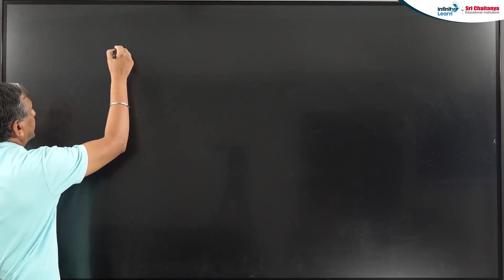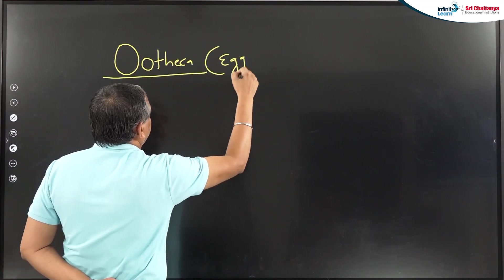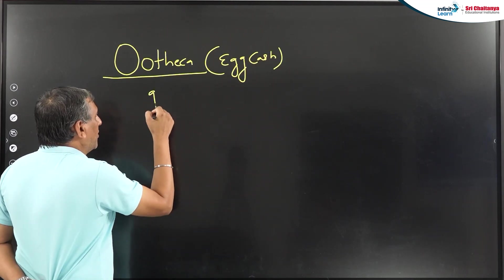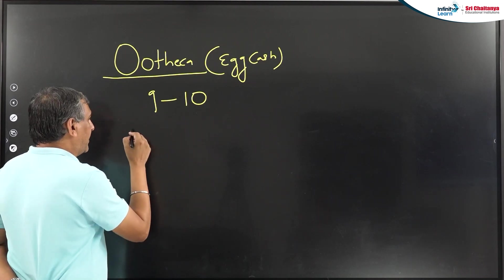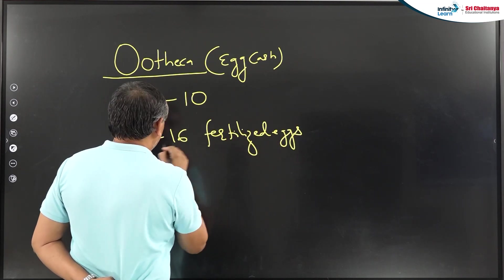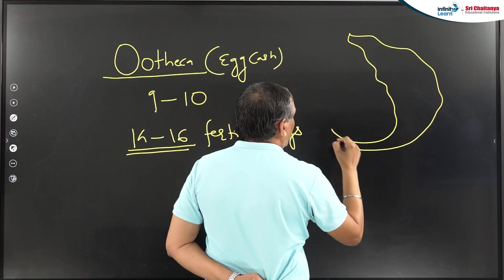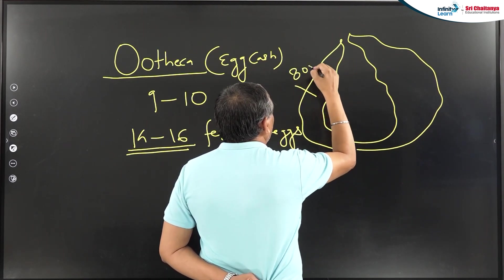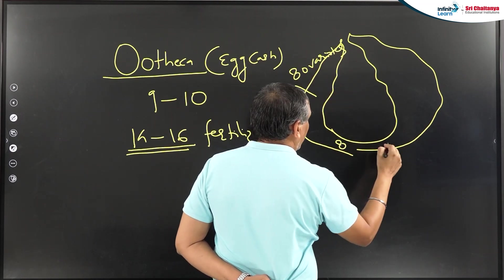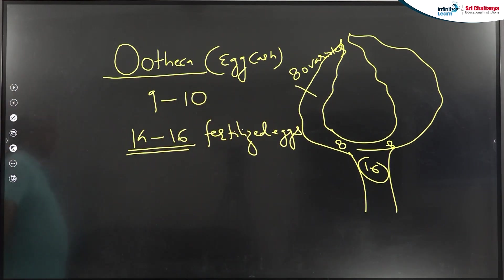One more important point: there is a structure known as the ootheca, which is the egg case. How many oothecae are formed? 9 to 10 oothecae are formed. In each ootheca, 14 to 16 fertilized eggs are present. This is because the female cockroach has a pair of ovaries, and each ovary is made up of 8 ovarioles — 8 from each, giving 16, which come into the common oviduct or vagina.